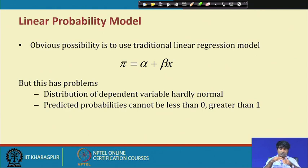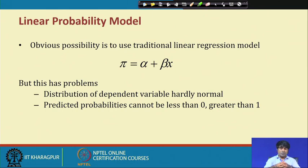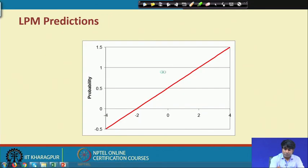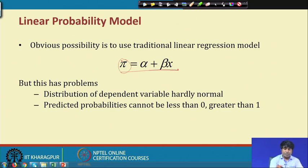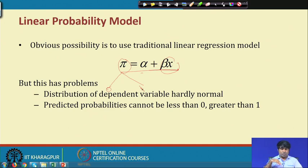We have two clusters: the first is the linear probability model, which is linear in nature, and in the second group — logit and probit — it is a non-linear probability model. In the linear case, the modelling will be simple, like y = α + βx, where y is the dependent variable and x is the independent variable. The dependent variable information will be either 0 or 1, and x may be one or more variables — not necessarily qualitative, it may be numeric — but the dependent variable must be qualitative and between 0 and 1.